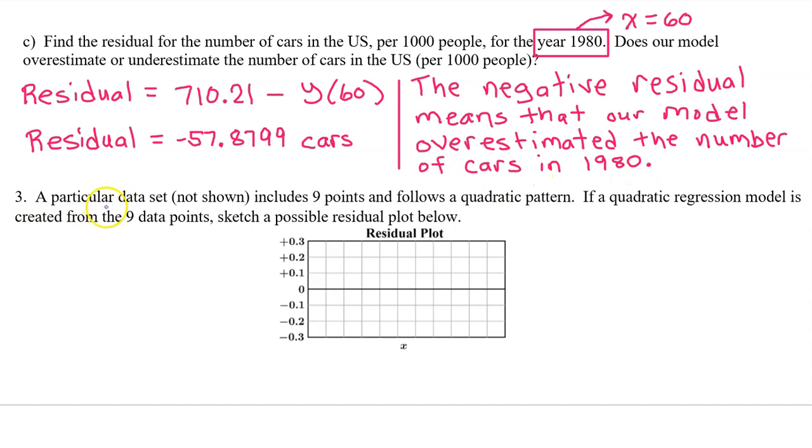Number 3: A particular data set, not shown, includes nine points and follows a quadratic pattern. If a quadratic regression model is created from the nine data points, sketch a possible residual plot below.